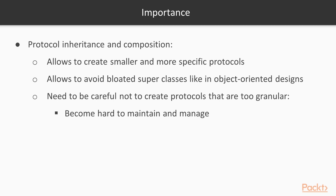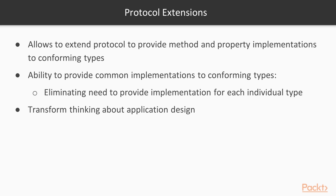Protocol Inheritance and Composition are extremely important to protocol-oriented design because they allow us to create smaller and more specific protocols. This allows us to avoid the bloated superclasses seen in object-oriented designs. We do need to be careful not to create protocols that are too granular, because they will become hard to maintain and manage. Protocol Extensions allow us to extend a protocol to provide method and property implementations to conforming types.